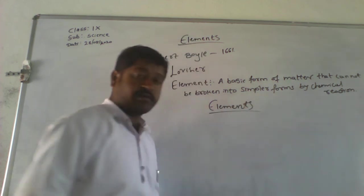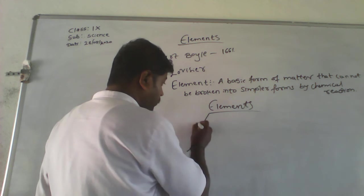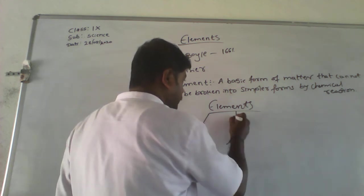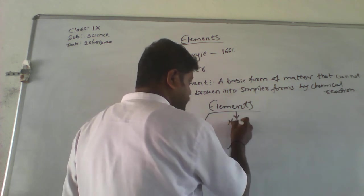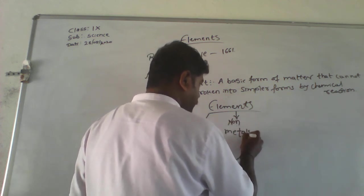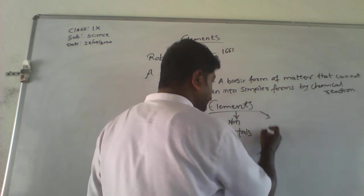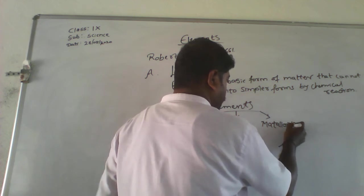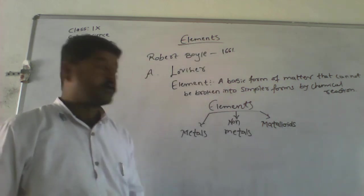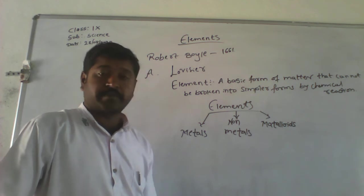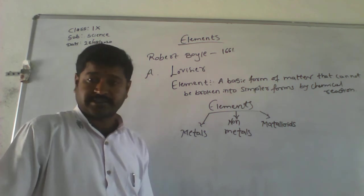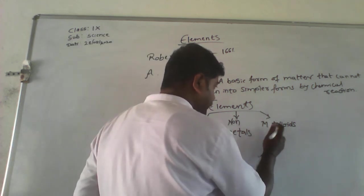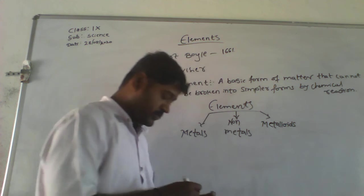Elements have three categories: one is metals, another is non-metals, and the third is metalloids.